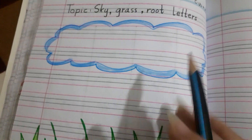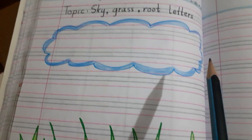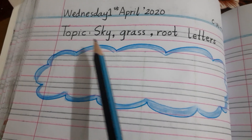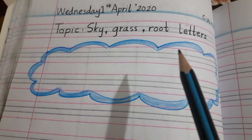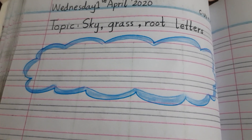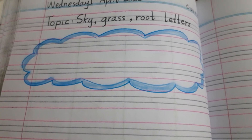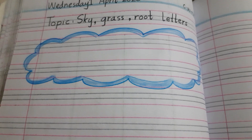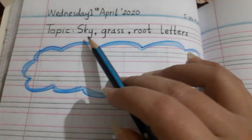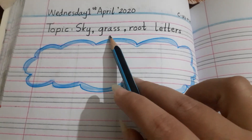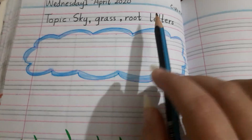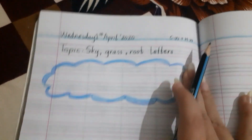We are going to learn about sky, grass, and root letters. As you can see, I have written the topic: sky, grass, and root letters. Basically, English alphabets are divided into three sections — sky letters, grass letters, and root letters. Sky letters are seven, grass letters are fourteen, and root letters are five. So let's begin our work.